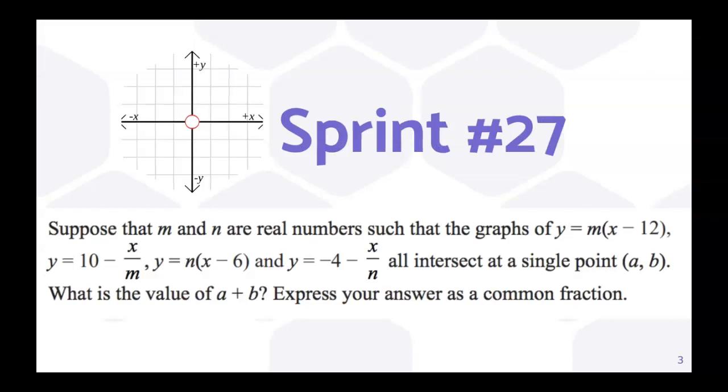Here's that question. Suppose that m and n are real numbers, such that the graphs of y equals m times the quantity x minus 12, y equals 10 minus x over m, y equals n times the quantity x minus 6, and y equals negative 4 minus x over n all intersect at a single point (a, b). What is the value of a plus b? Express your answer as a common fraction.